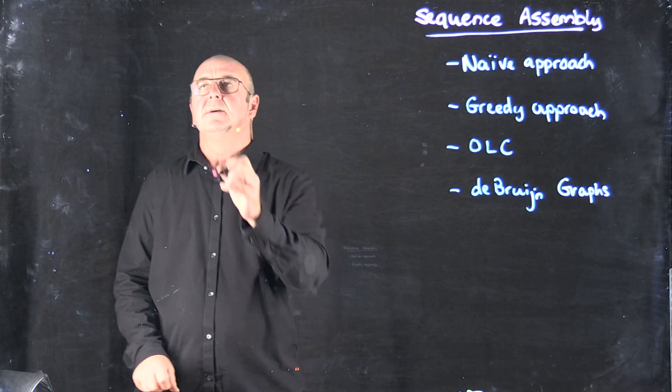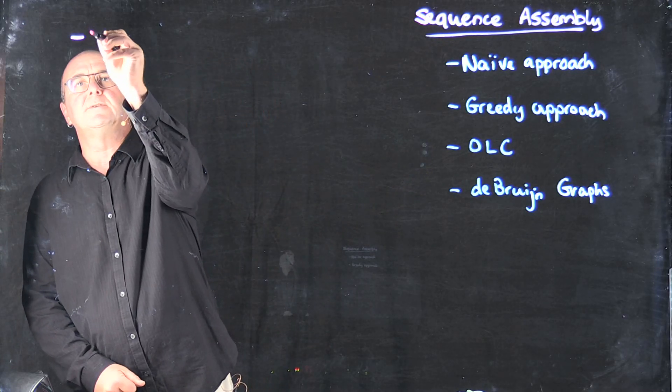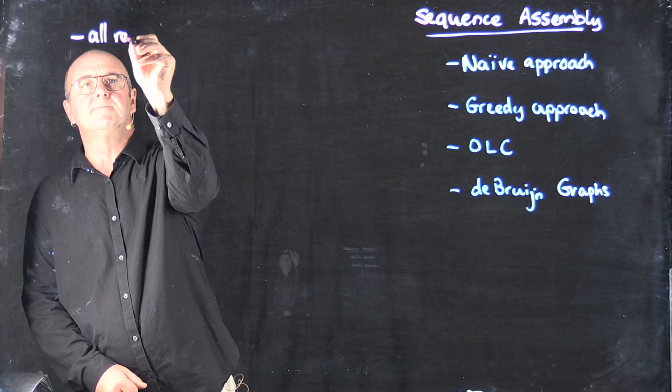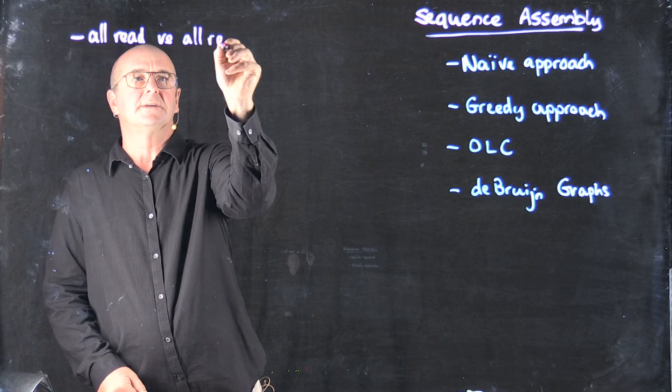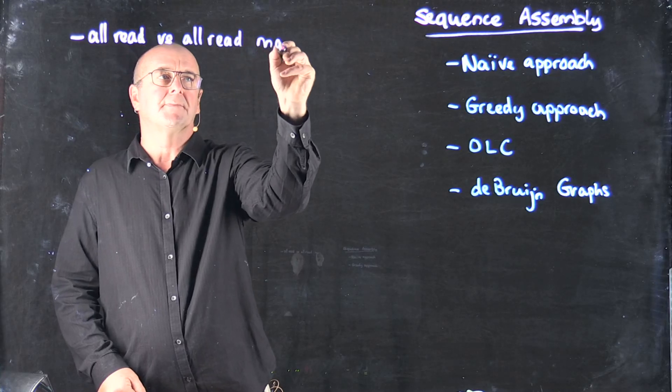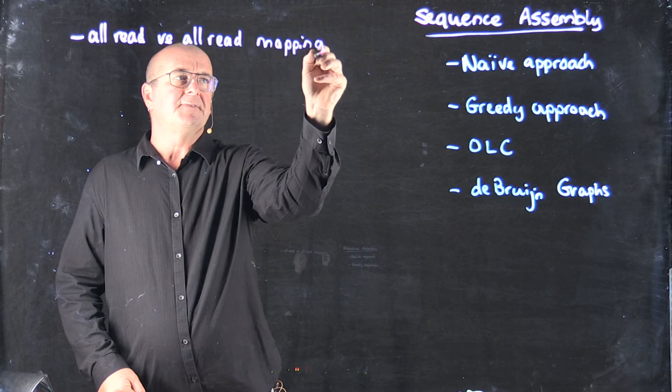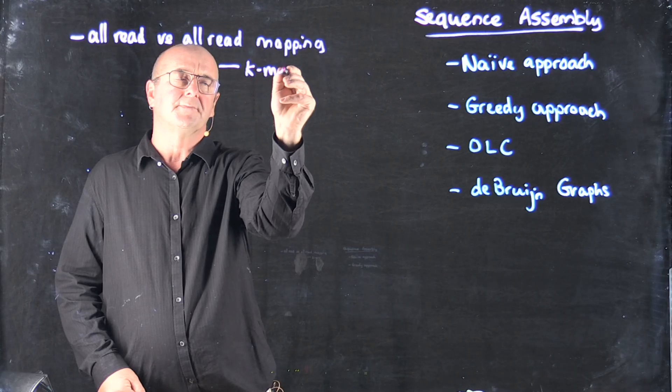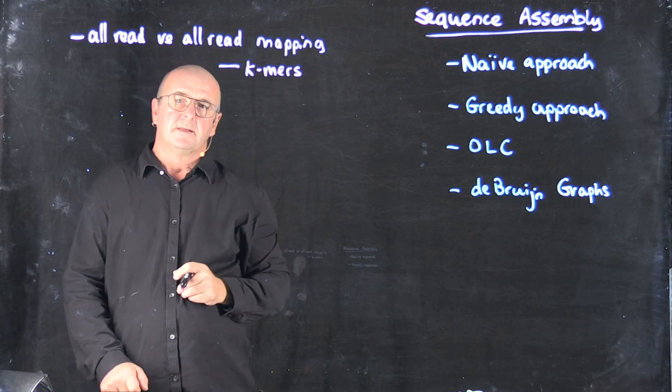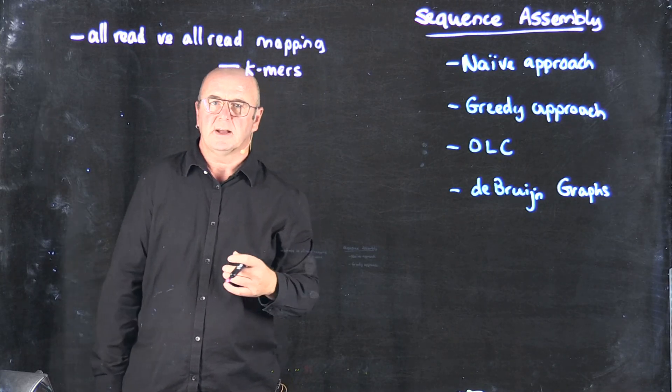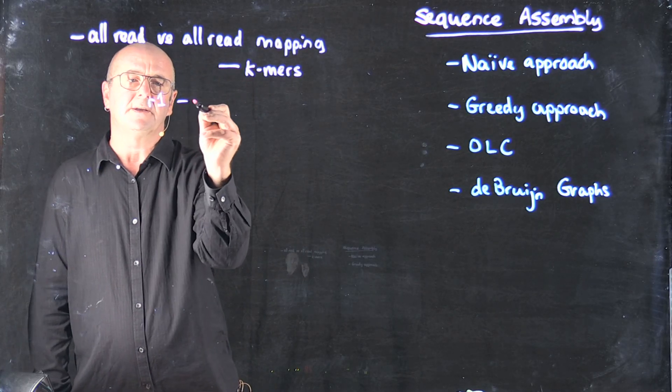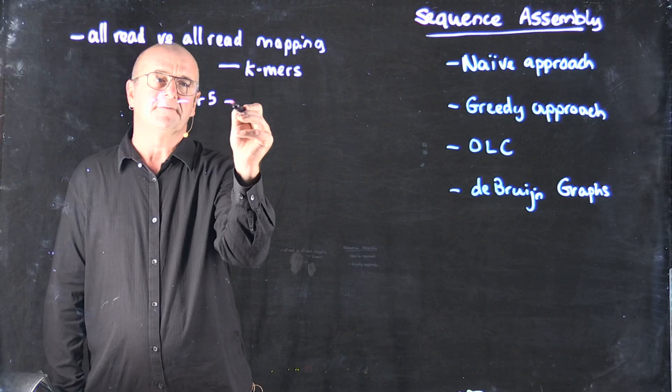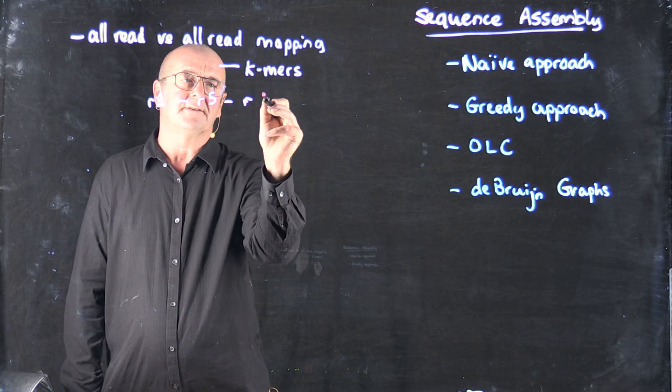Basically what we do here is we'll do an all read versus all read mapping, and very often we'll do that with short k-mers because it's quick to do that and it tells us there's a connection, for example, between read 1 and read 5 and between read 5 and read 8.